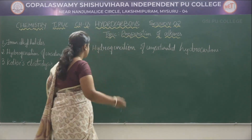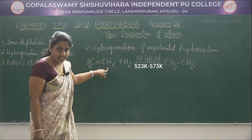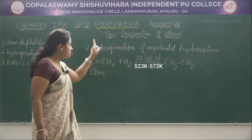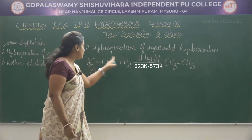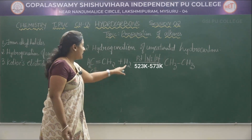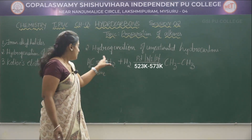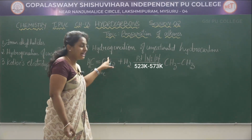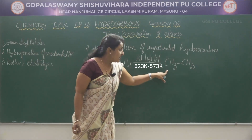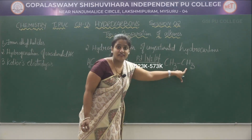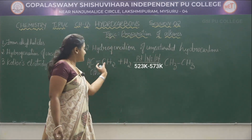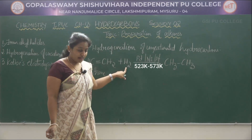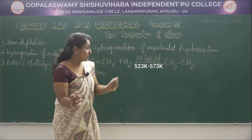In hydrogenation, we take unsaturated compounds and add hydrogen to them. The addition of hydrogen is known as hydrogenation. The addition of hydrogen to unsaturated hydrocarbons gives rise to alkanes. For alkenes: considering ethylene (C₂H₄), one of the double bonds is removed and hydrogen is added to these carbon atoms. The double bond is converted into a single bond, giving ethane.